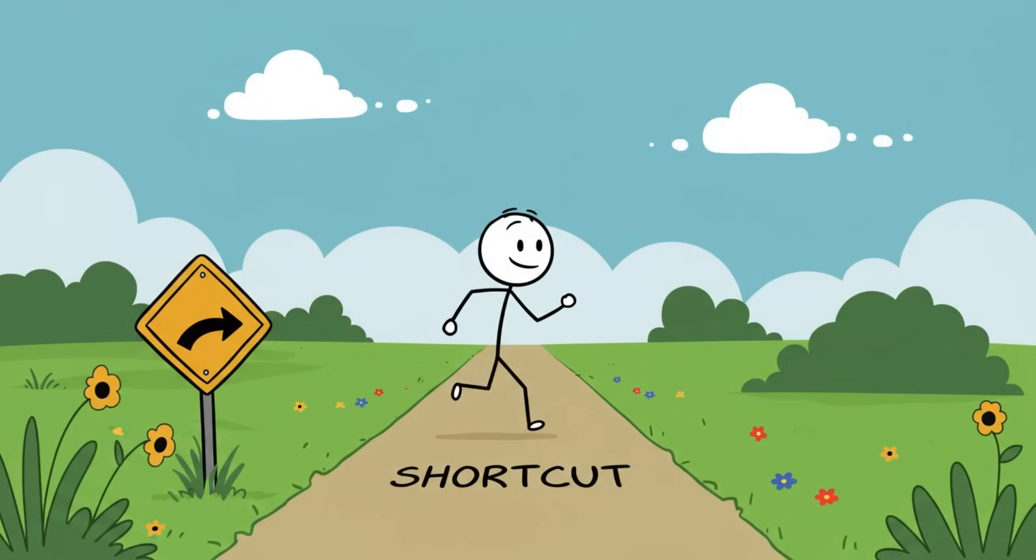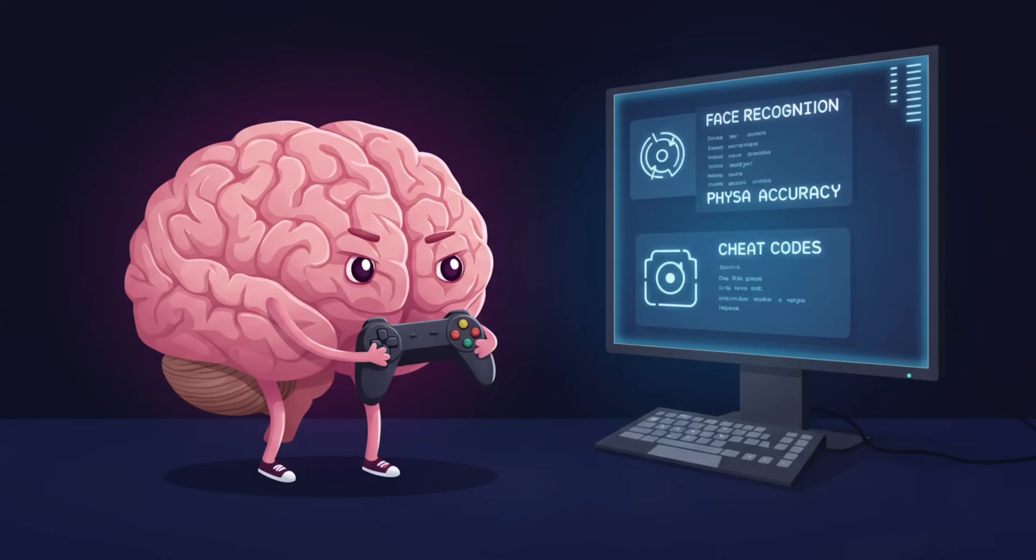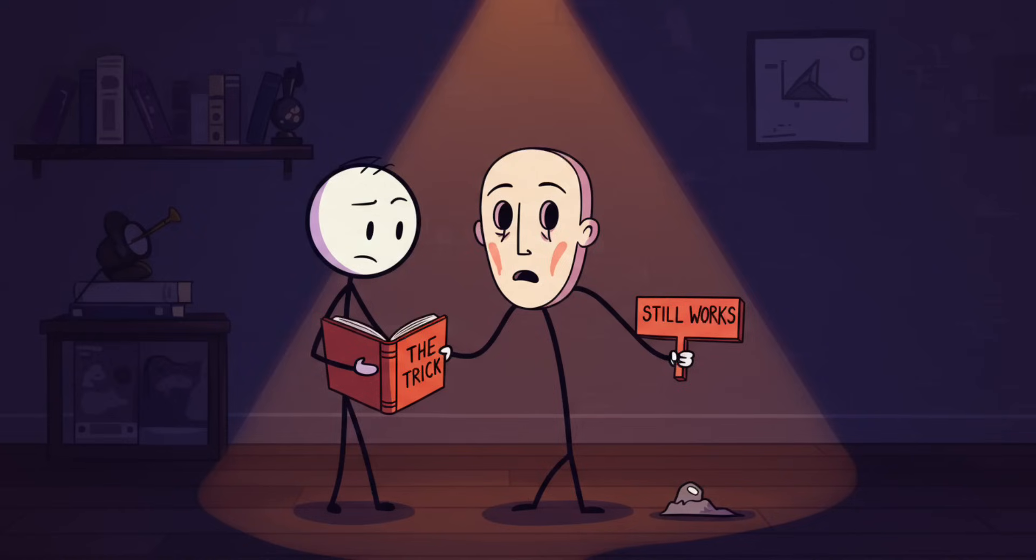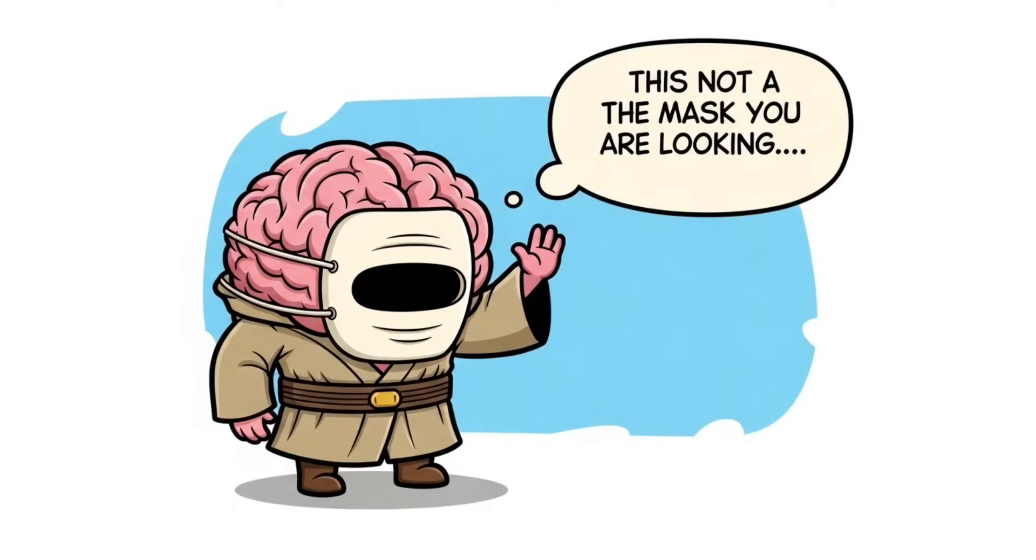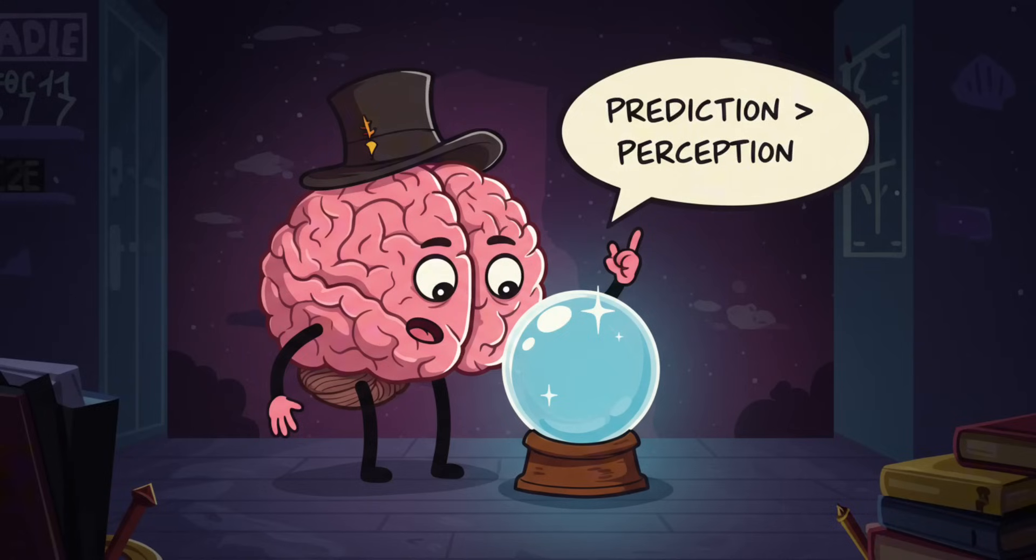Evolution hardwired us to recognize faces instantly. It's crucial for survival, social bonding, and figuring out who's about to steal your fries. That shortcut works great most of the time, but illusions like this expose the cheat codes. Your brain prioritizes face recognition over physical accuracy. What's wild is that this illusion is so strong, even knowing the trick doesn't break it. You could literally stick your hand into the hollow mask, see your fingers disappear inside, and your brain will still say yep, still a solid face, nothing weird happening here. It's basically the Jedi mind trick of optical illusions.